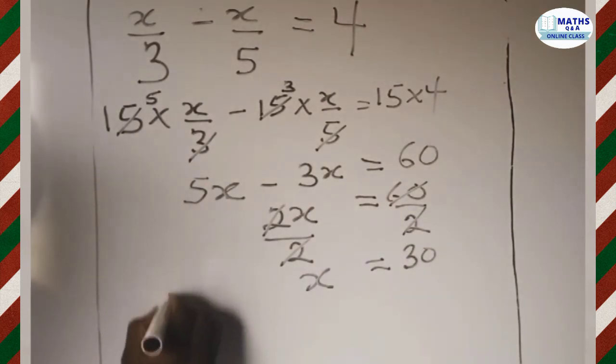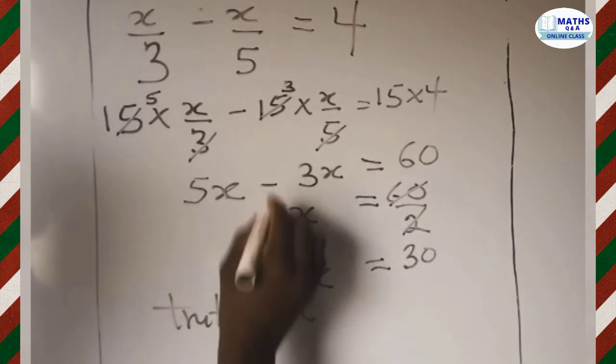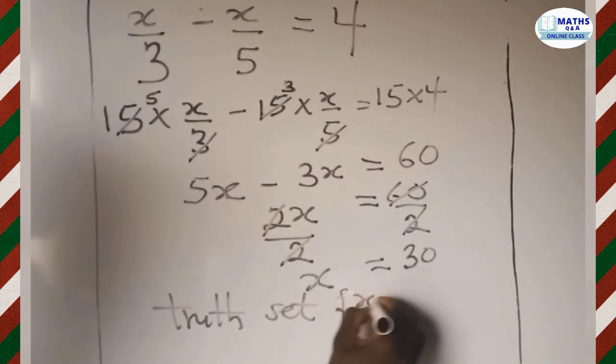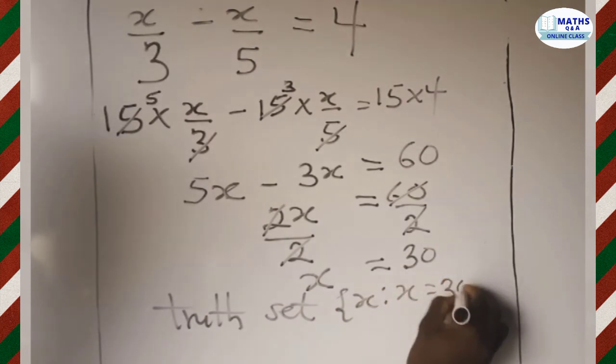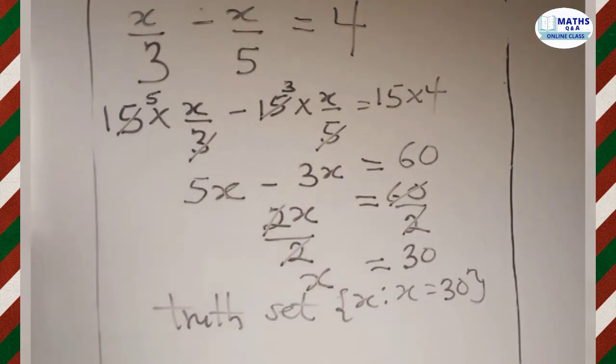And we have to write the truth set, so the truth set for this question is the set where x is equal to 30. Now this is the answer, so let's compare this with the options given to us.